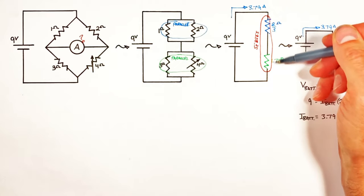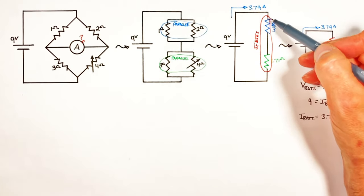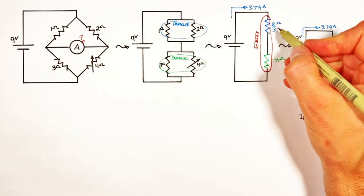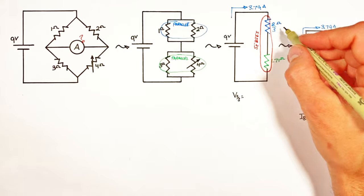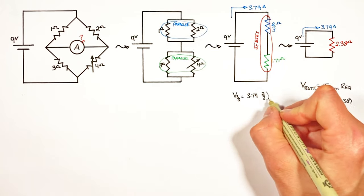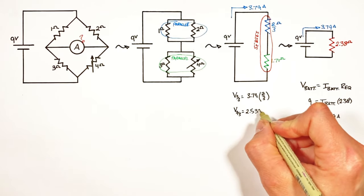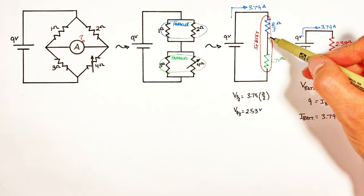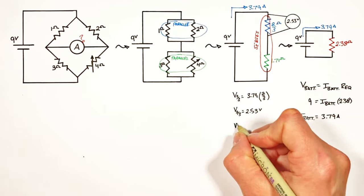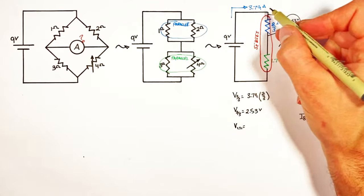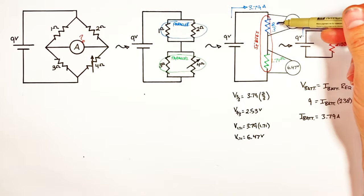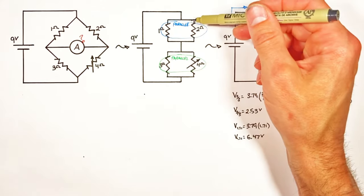Because these resistors are in series, those 3.79 amps pass through each one. That means we can solve for the voltage across each resistor. The voltage across the two-thirds ohm resistor is 3.79 amps multiplied by two-thirds, which gives 2.53 volts. Doing similar math for the other resistor, the voltage across the 1.7 ohm resistor is the current multiplied by the resistor value.